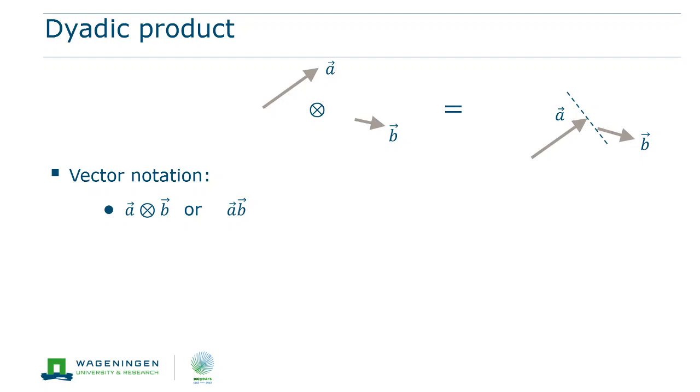The meaning of the dyadic product cannot easily be depicted. But it is important to notice that the direction of both vectors play a role independently. The result of the dyadic product is a second-order tensor. Hence, we also sometimes call it the tensor product.